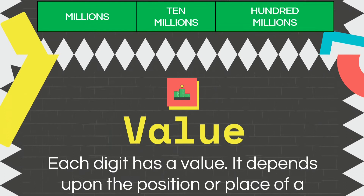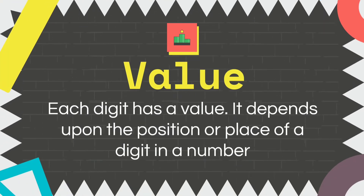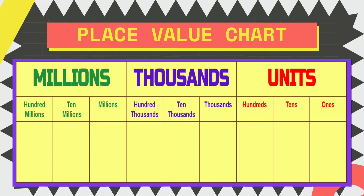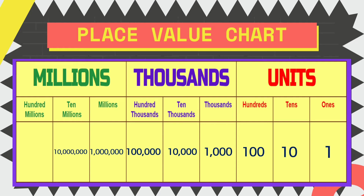Now, let's have the value. Each digit has a value that depends upon its position or place in a number. The values are: one, ten, one hundred, one thousand, ten thousand, one hundred thousand, one million, ten million, and one hundred million.